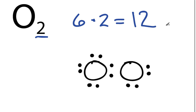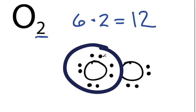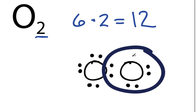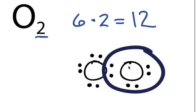We've used 12 valence electrons, what we have to use. Let's see if we have an octet, or 8 valence electrons. For that oxygen, 2, 4, 6, 8, that's fine. But for this oxygen, we only have 2, 4, 6. It's not an octet, and that's not going to be stable.